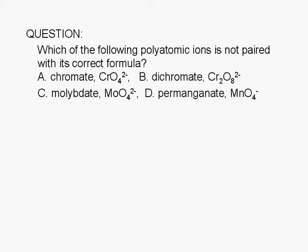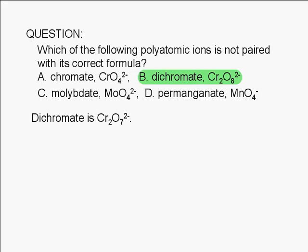The correct answer is B. Dichromate is Cr2O7 with a negative 2 charge, not Cr2O8 with a negative 2 charge.